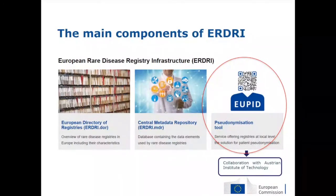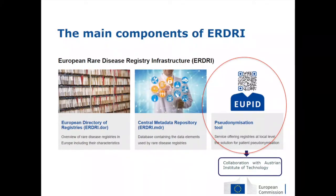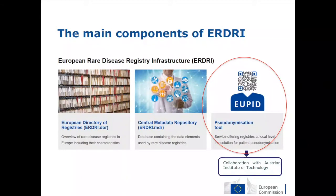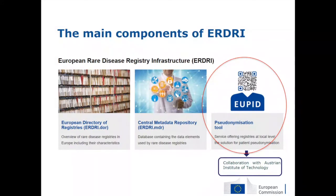The main components of the rare disease registry infrastructure are three. We previously presented the European Directory of Registries (EIRDRI-DOR) and the Central Metadata Repository. But today we are discussing the third component — UPIT, the pseudonymization tool — which we are offering through EIRDRI. This tool has been developed by the Austrian Institute of Technology, and our collaborators will present part of the presentation today.